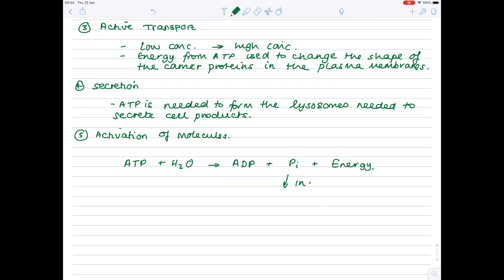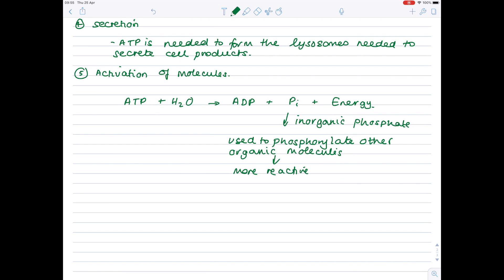This inorganic phosphate can be used to phosphorylate other compounds in order to make them more reactive. Now, this is a good thing, and it's actually due to a chemistry reason, because what it does is it lowers the activation energy in enzyme-catalyzed reactions.